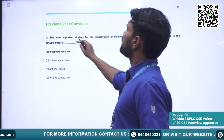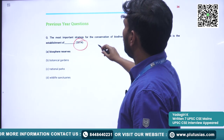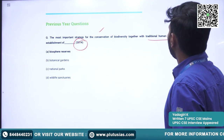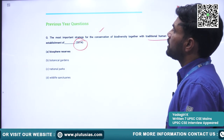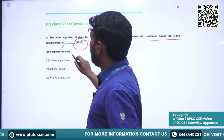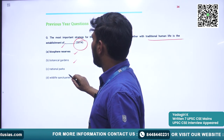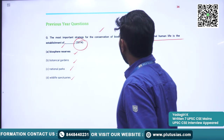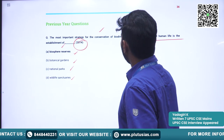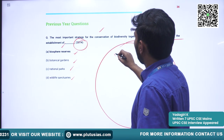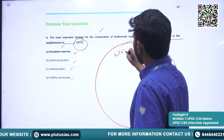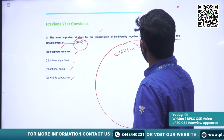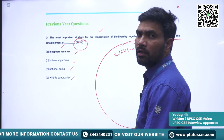First question, asked in 2014: 'The most important strategy for conservation of biodiversity together with traditional human life is the establishment of what?' Options are: Biosphere Reserves, Botanical Gardens, National Parks, Wildlife Sanctuary. We have just seen that Biosphere Reserves cover a wide area where wildlife and indigenous people live in harmony.